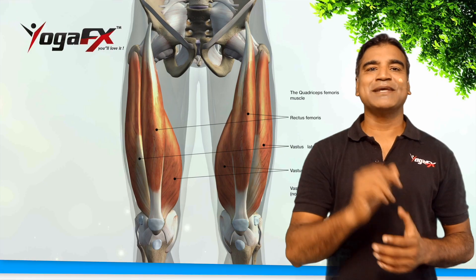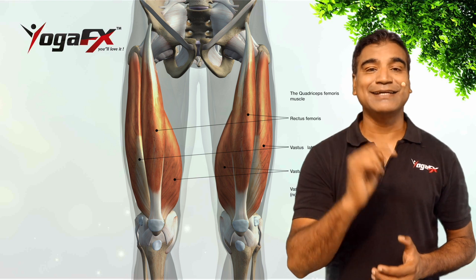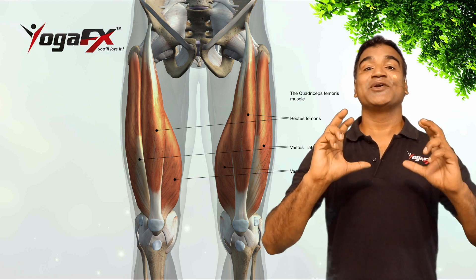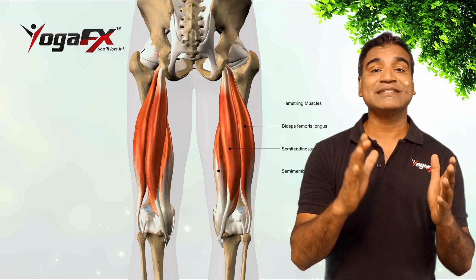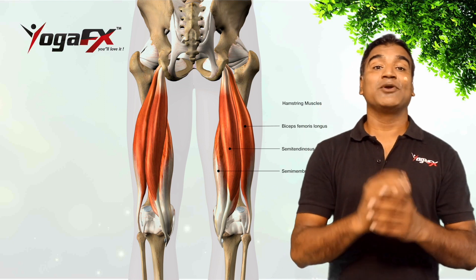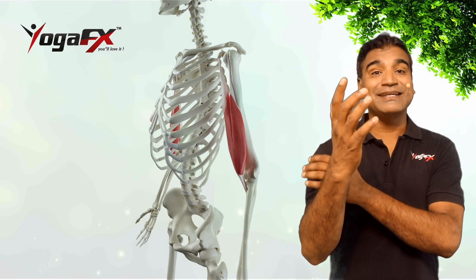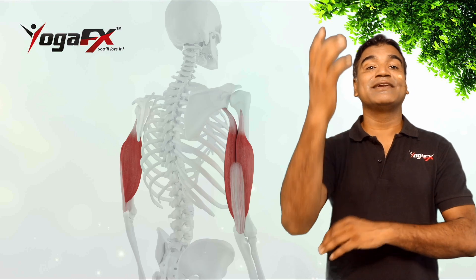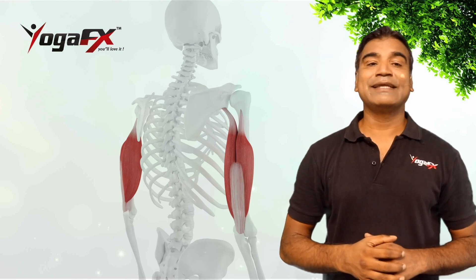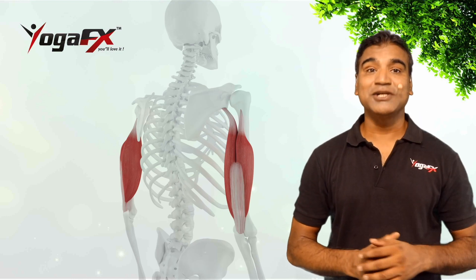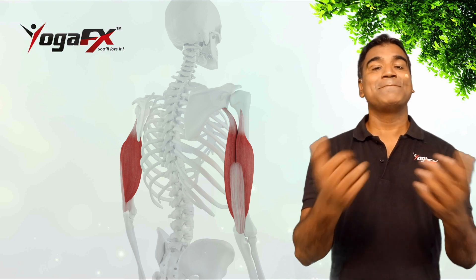To sum it up with examples: in a yoga pose such as Paschimuttanasana, that is seated forward bend, the quadricep muscles are the agonist because they contract, and the hamstrings are the antagonist because they stretch. Similarly, when we bend our elbow, the bicep is the agonist muscle that contracts, and the tricep is the antagonist muscle because it stretches to allow the elbow to bend.